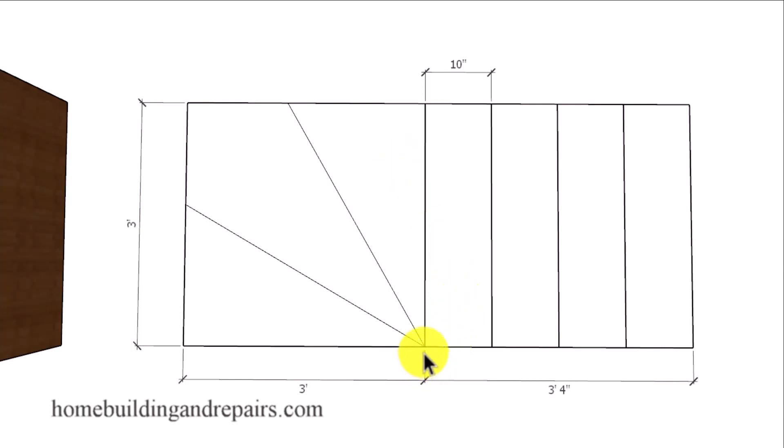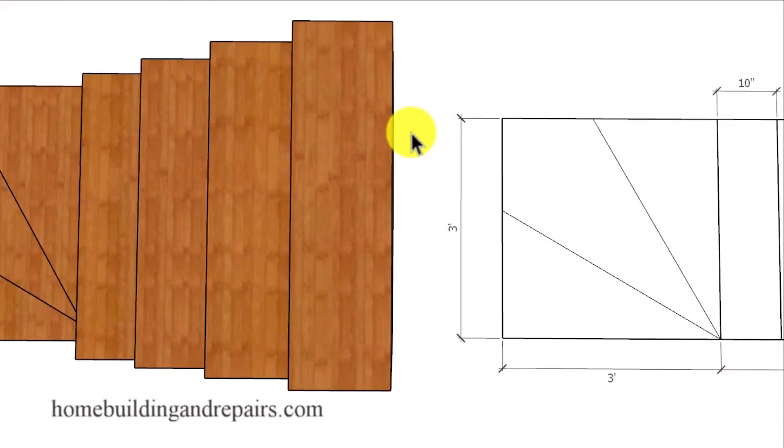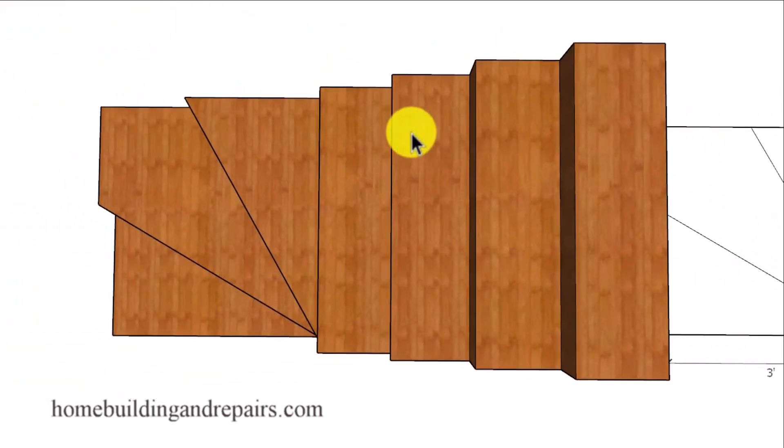So let's go ahead and take a look at the winder steps dying into one point here along with a three foot wide stairway and 10 inch treads. And I have built plenty of stairs like this before they changed the building codes.